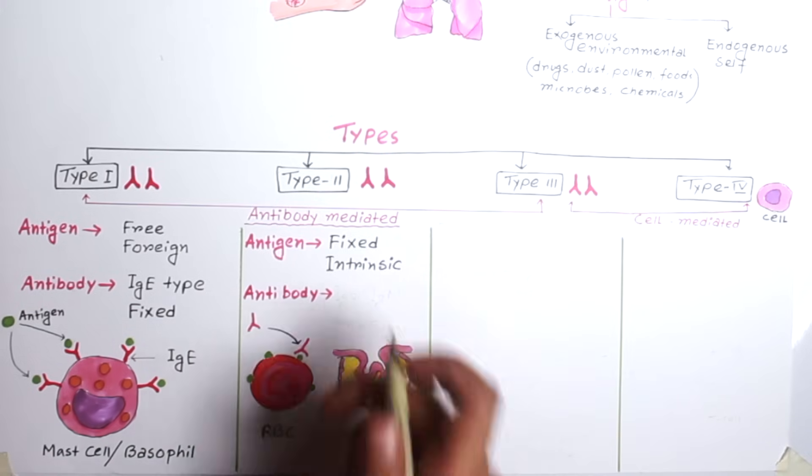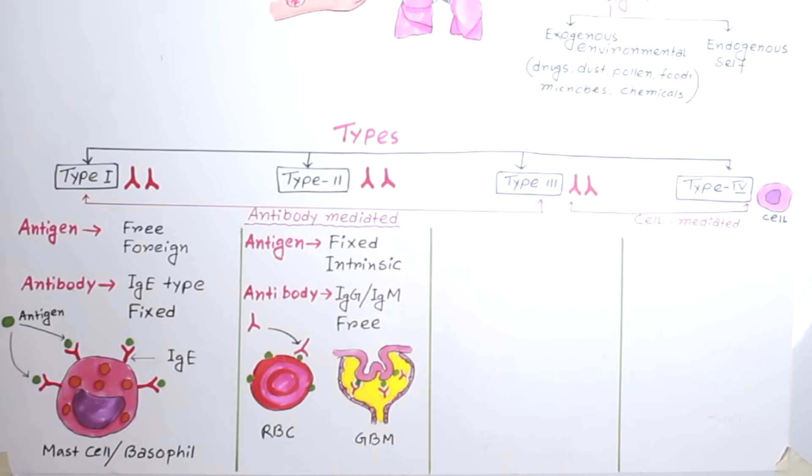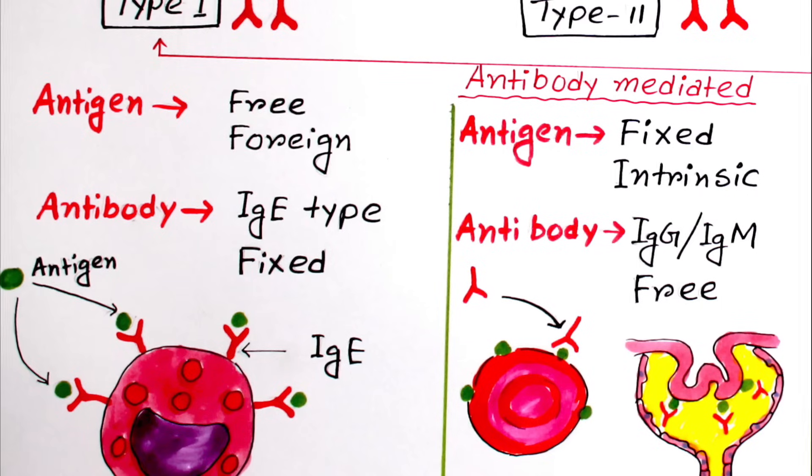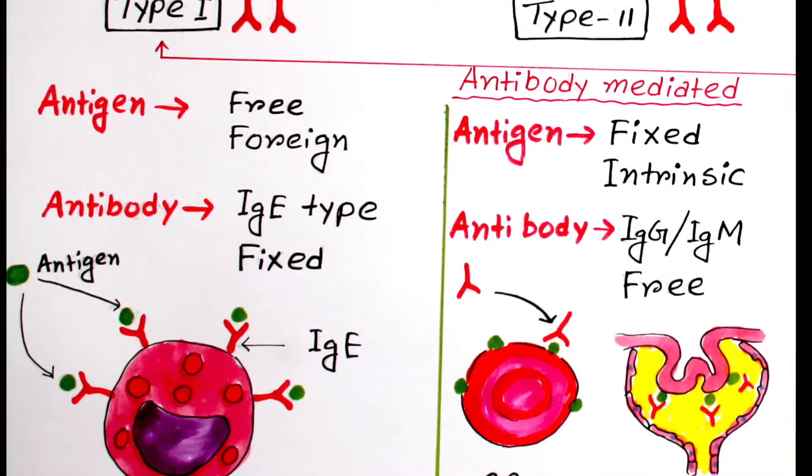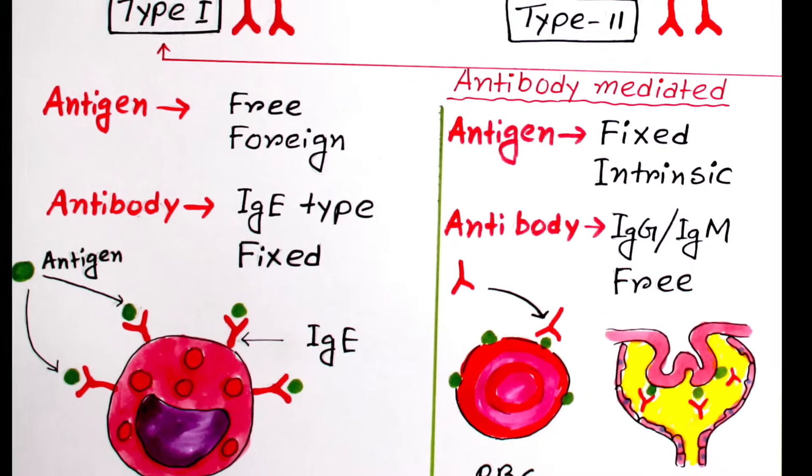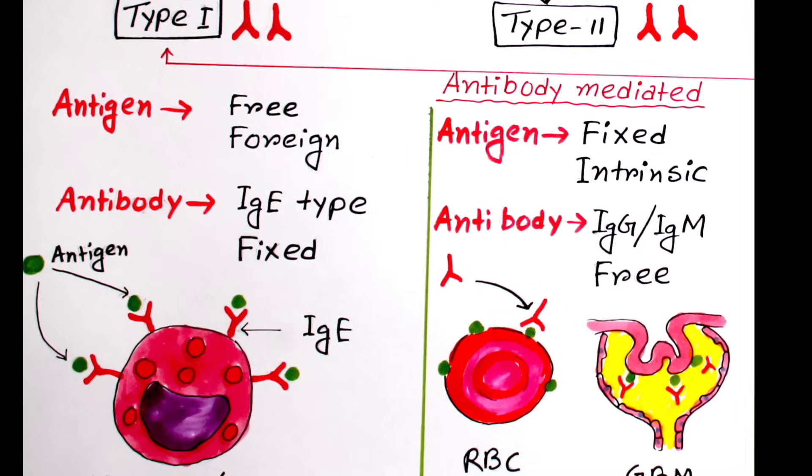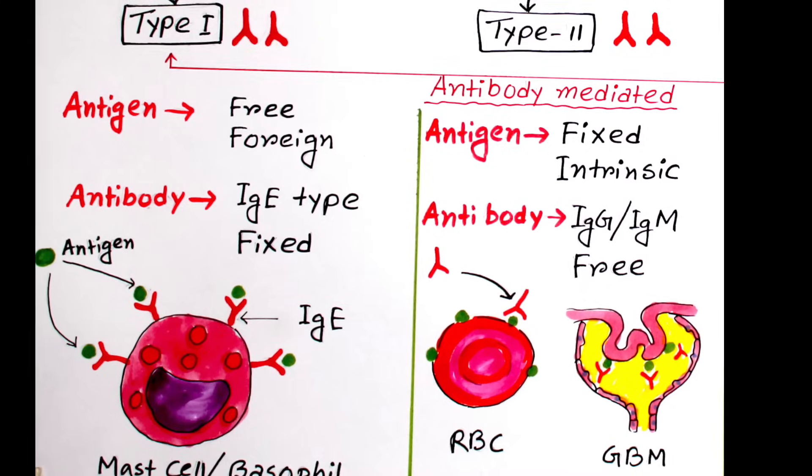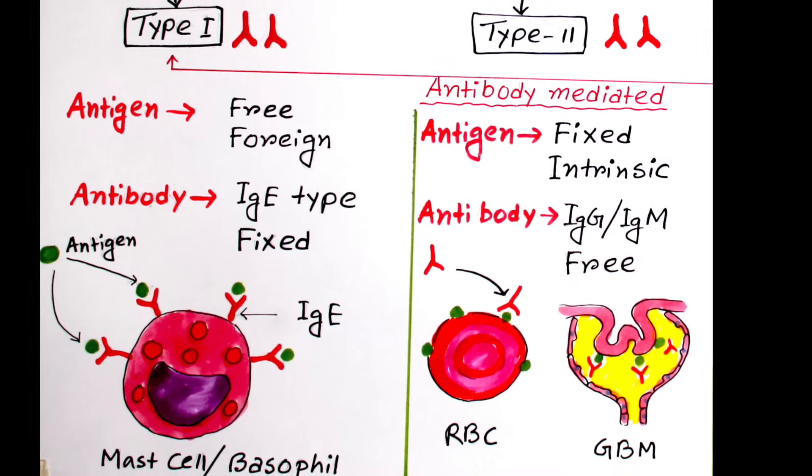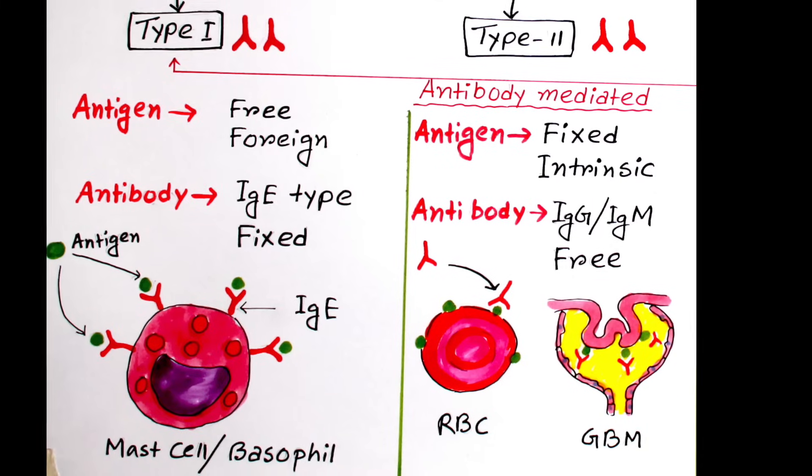Here antibodies involved are IgG and IgM type. They are free in the circulation, so they have to come to the target tissue for their reaction. So, in Type 1 hypersensitivity, the reaction always occurs on the mast cell and in Type 2 hypersensitivity reaction, it always occurs on target tissue. So in these two reactions, there is no antigen antibody complex present in the general circulation.